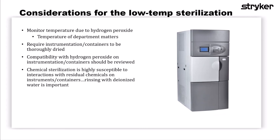Considerations for low-temperature sterilization — these are true of all forms, specifically those that utilize hydrogen peroxide. Hydrogen peroxide is sensitive to temperature, so temperature matters for all modalities. Instrumentation must also be completely dry, as hydrogen peroxide will grab hold of moisture within your load and could lead to an aborted cycle. We always want to consider compatibility of instrumentation as well as containers. And since this is chemical sterilization, it is highly susceptible to interactions with other chemicals, so rinsing with deionized water is an important step before putting instrumentation into a low-temperature sterilizer.